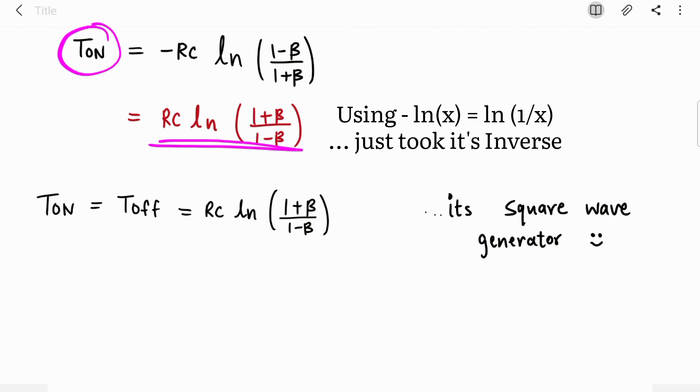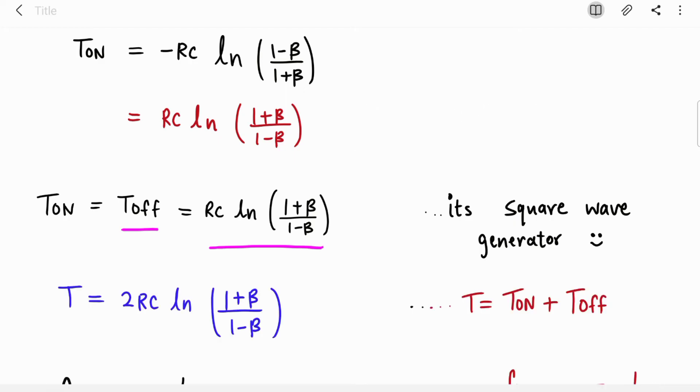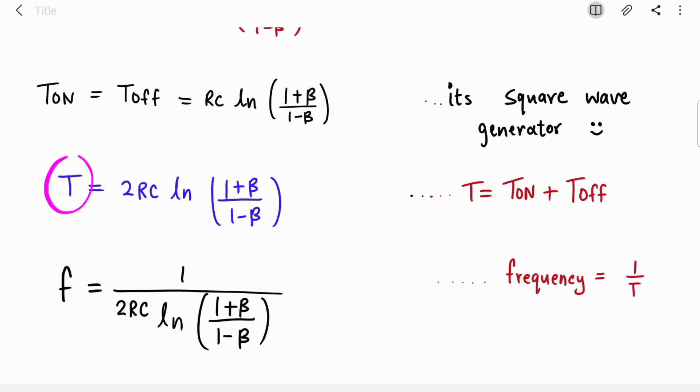This equation is for T on. But it is a square wave generator, so T on is nothing but T off, both are equal. So you can simply write T off is the same equation. So T is T on plus T off. T becomes twice of this equation. I have just multiplied by 2 and wrote the same equation.